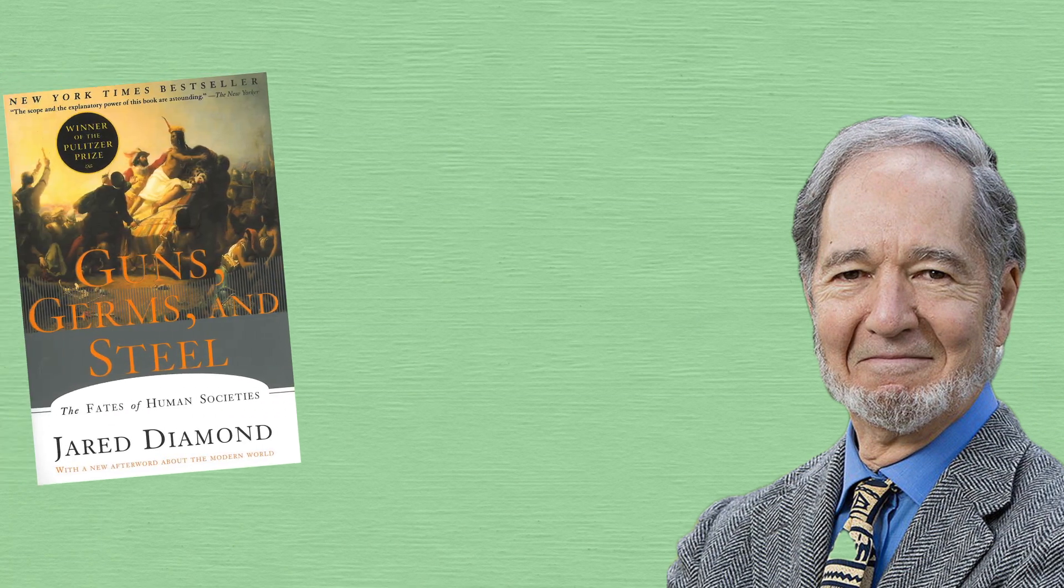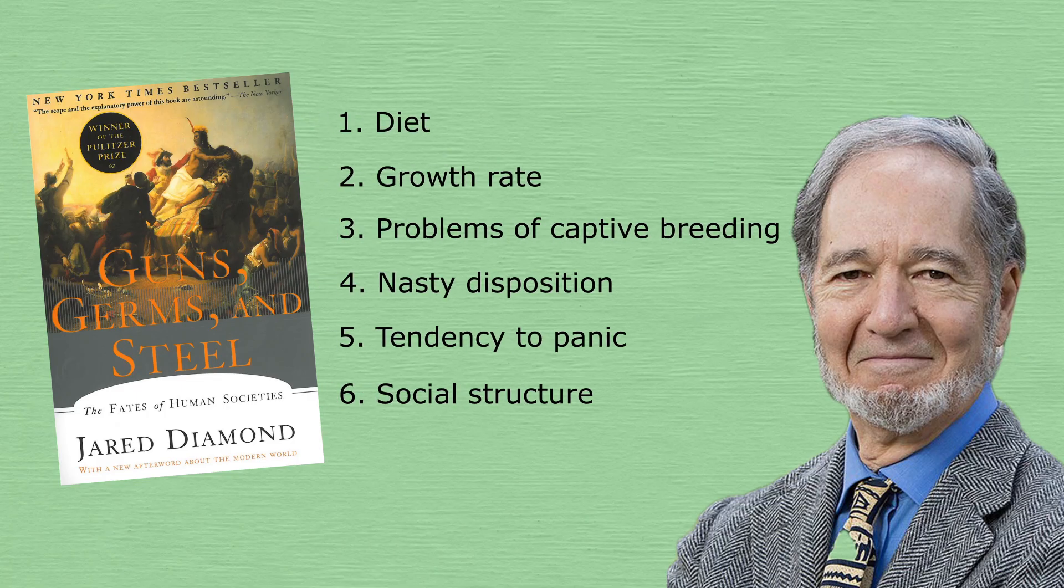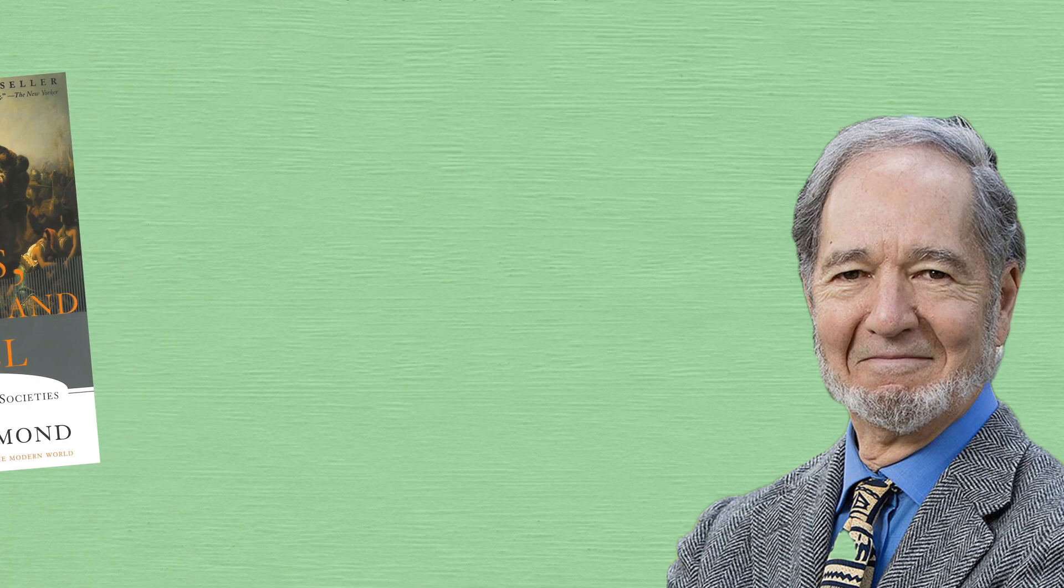In his book Guns, Germs and Steel, Jared Diamond outlines six reasons why some animals have never successfully been domesticated. Before we look at these, it's important to understand what we mean by domesticated.